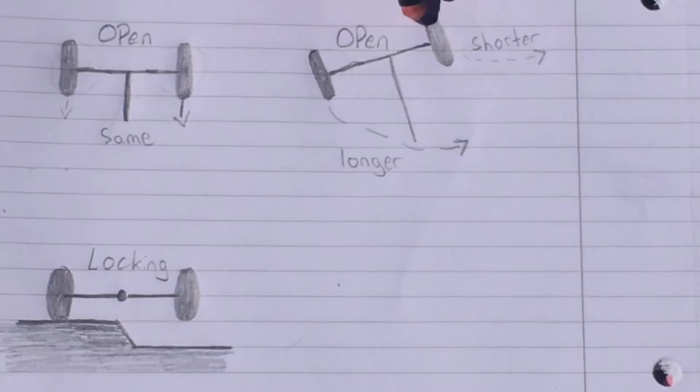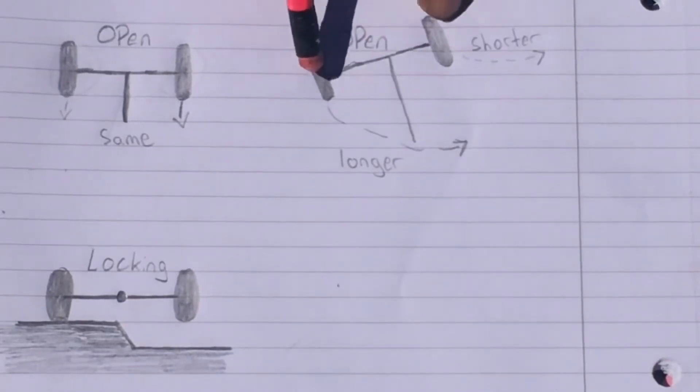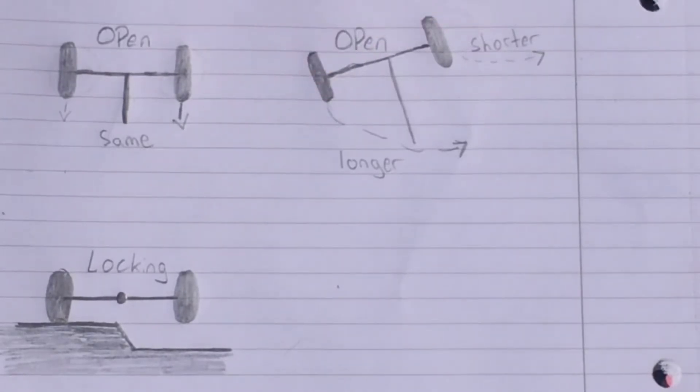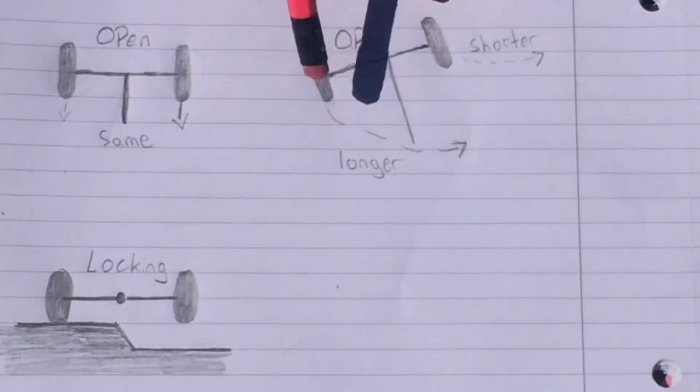Because when you're turning you want this wheel to be going faster than this wheel. That's what makes you turn and not skid, because otherwise if they're moving at the same speed, this one would be turning and this one would pretty much just be dragging around the corner, which is not good for your vehicle.